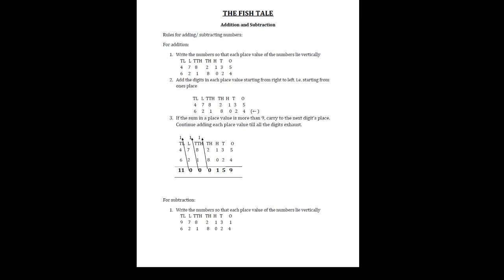Before we start addition and subtraction, let us know the rules. For addition, we have to write the numbers so that each place value lies vertically — the ones place digits one below the other, tens place digits one below the other, hundreds place also one below the other. Likewise, continue writing numbers vertically in their respective place value positions.